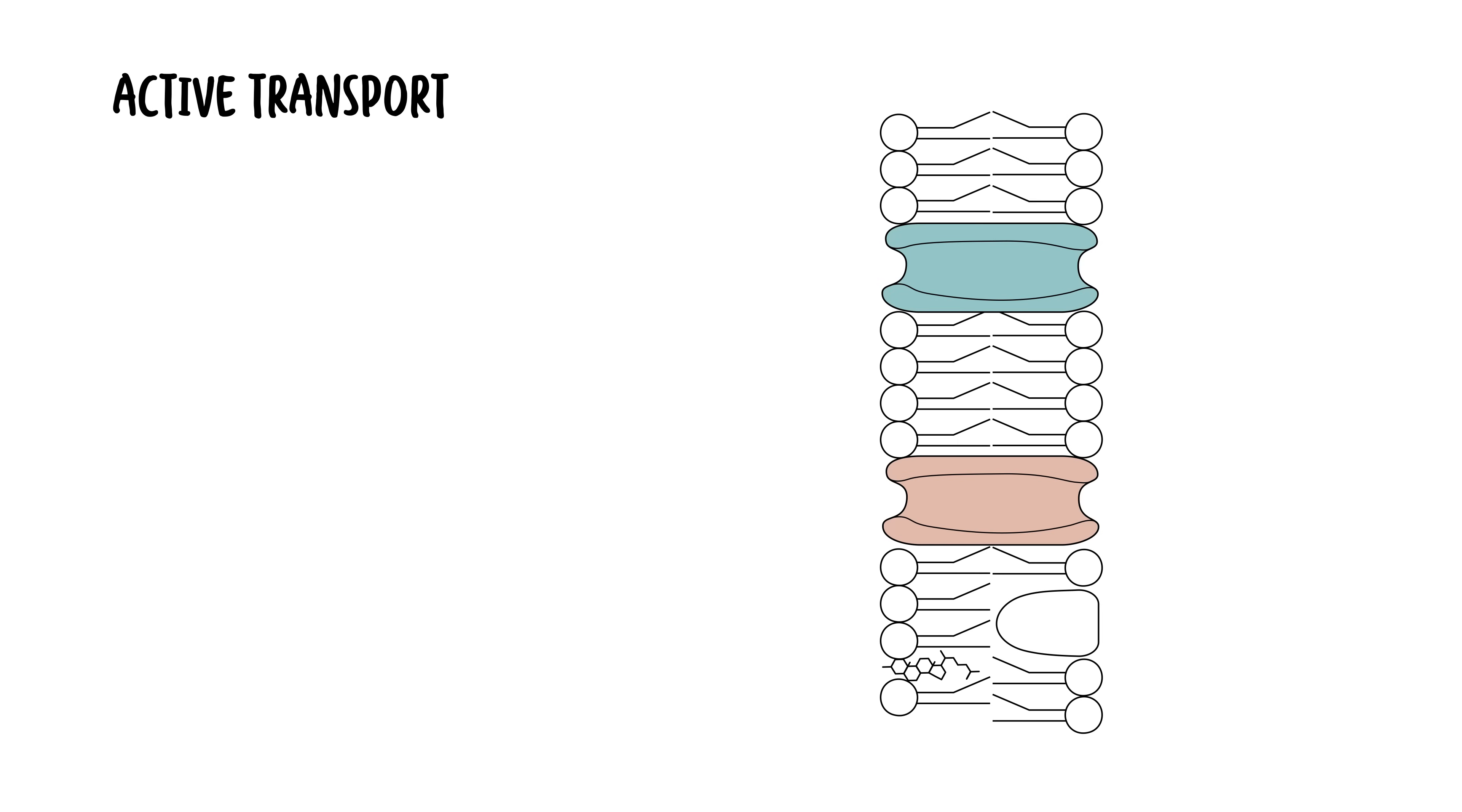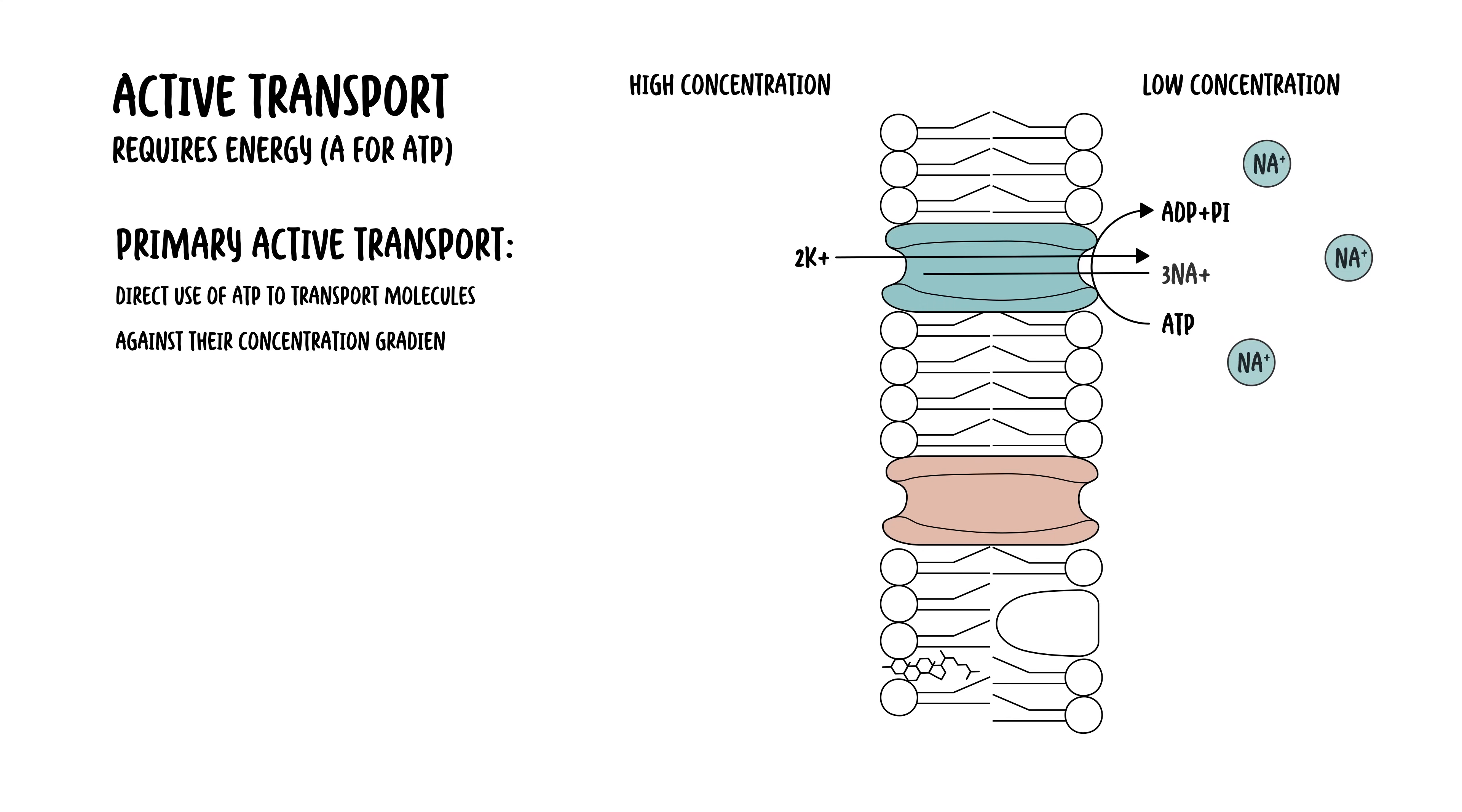Next, you have active transport. In active transport, you need energy, A as in ATP. A for active, A for ATP. Active transport can be divided into primary and secondary. Primary active transport is where you have direct use of ATP to transport molecules against their concentration gradient via pump proteins such as the sodium-potassium pump.